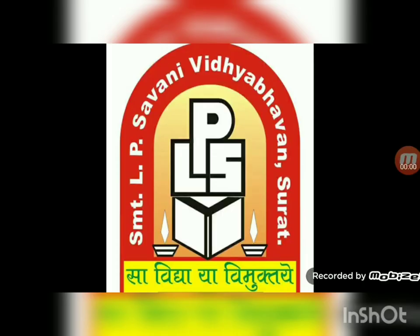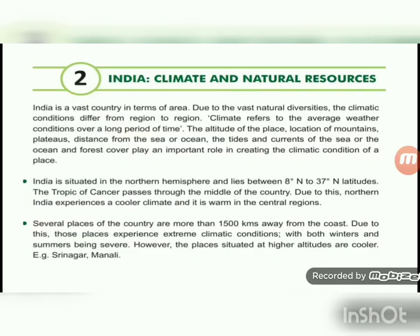Good morning. Riti Thakkar back with SS Standard 7 Chapter 2, India Climate and Natural Resources. India is a vast country in terms of area. Due to the vast natural diversities, the climate conditions differ from region to region. Climate refers to the average weather conditions over a long period of time.